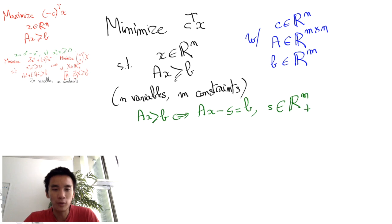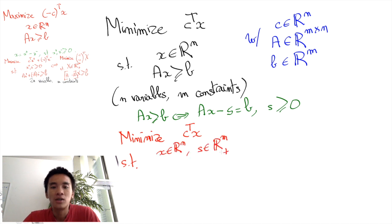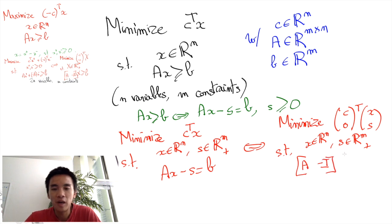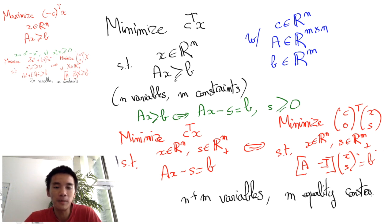We obtain the following equivalent formulation: minimize C transpose X with X in R^n and S in R^m plus, subject to AX minus S equals B. In more matrix terms, this corresponds to minimize the vector [C, 0] transpose [X, S] with X in R^n and S in R^m plus, and the equality constraints [A, -I] multiplied by [X, S] equals B. This program has n plus m variables and m equality constraints.